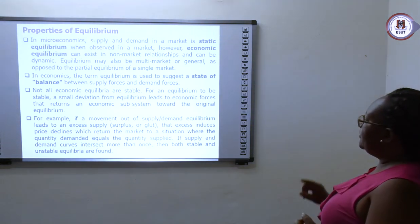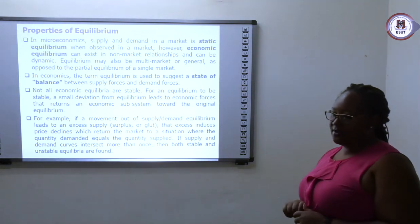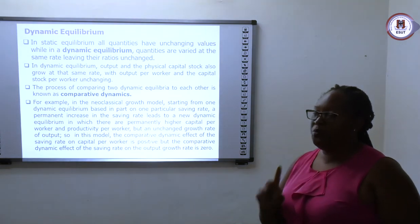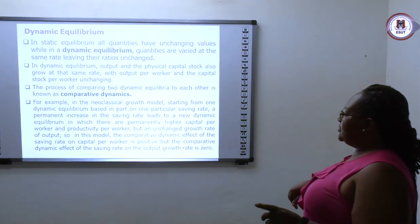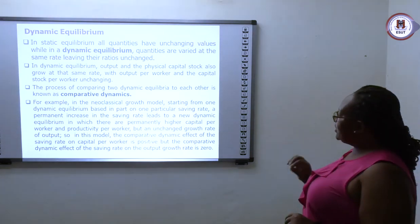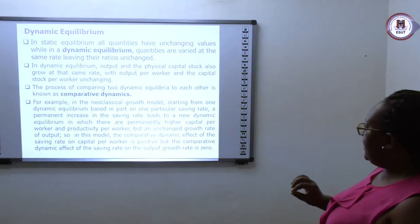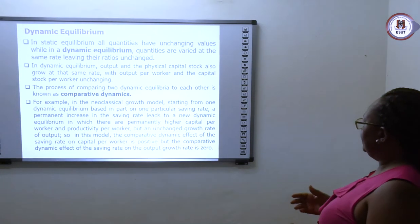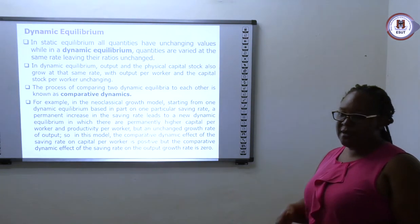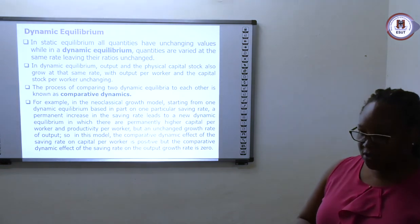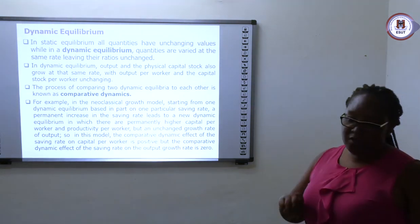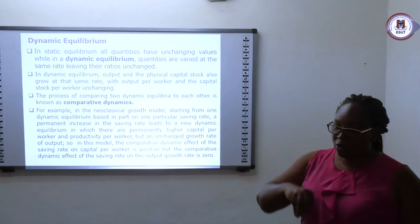The first question you ask yourself is: does equilibrium exist? If equilibrium exists, the next question is whether there is one equilibrium or multiple equilibria. After ascertaining that equilibrium exists, you ask: is the equilibrium stable? Stability means that even if there is a divergence from the original equilibrium, the forces of demand and supply will bring it back to the initial equilibrium. Dynamic equilibrium adjusts the equilibrium from the old one to the new one.